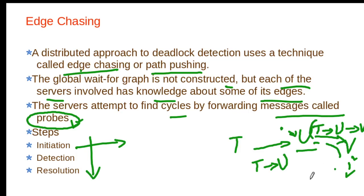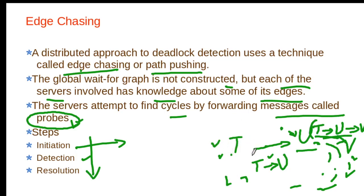In the detection phase, if transaction T eventually receives a probe saying T is waiting for U through a chain where the last entry is waiting for T, then T realizes there is a deadlock. The deadlock must then be resolved, and the only option is that one of the transactions in the cycle must abort, which may depend on assigned priorities.